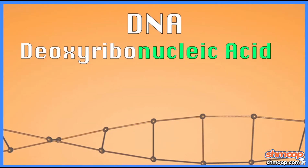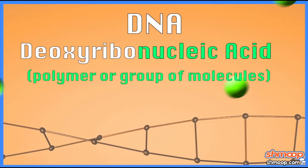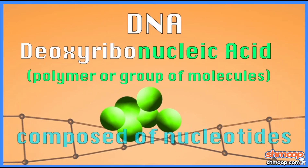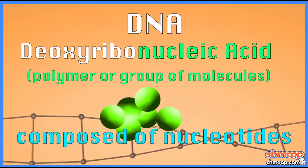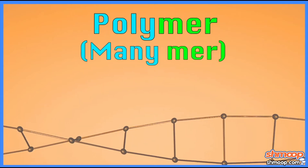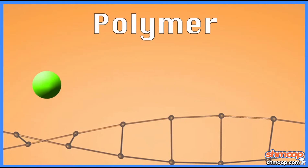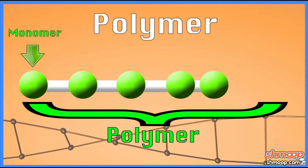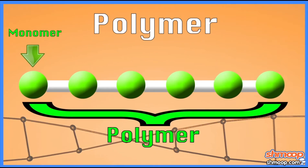Nucleic acid is basically any polymer — any group of molecules in your cells that are composed of nucleotides. So it has three parts: a base made of nitrogen, a phosphate group, and a sugar. A polymer — that's many-mer — basically you have one unit of molecule and then you string a bunch of them together. So it's a monomer to a polymer, just like beads.